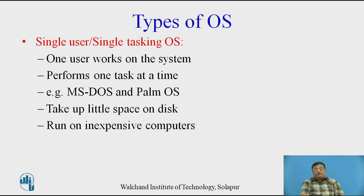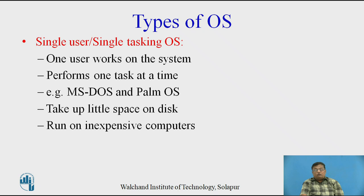The different types of operating systems: the first is called the single-user, single-tasking operating system, meaning only one user works on it and performs one task at a time. Examples are MS-DOS and the PALM operating system. These operating systems require very little disk space and run on inexpensive, lower-configured systems.